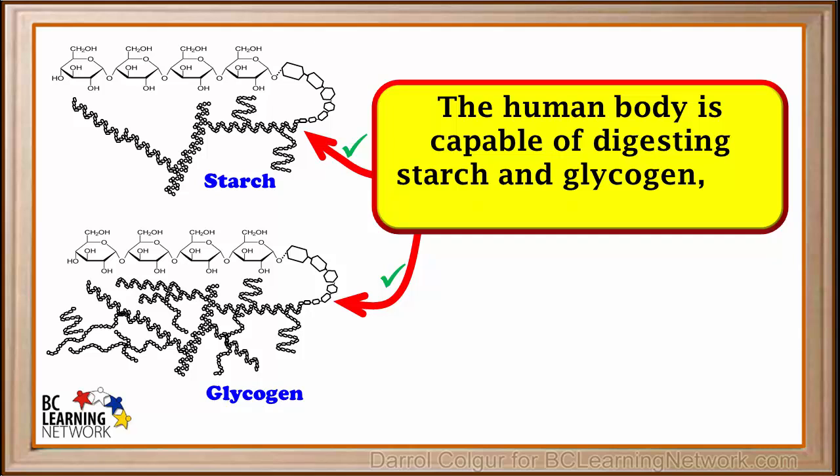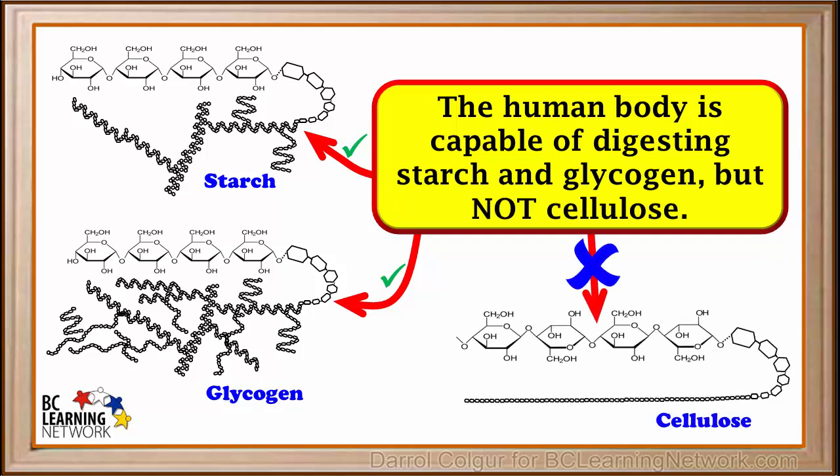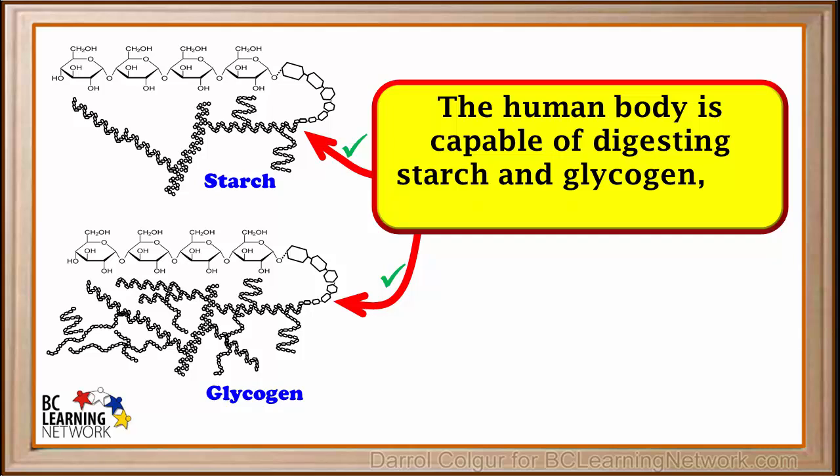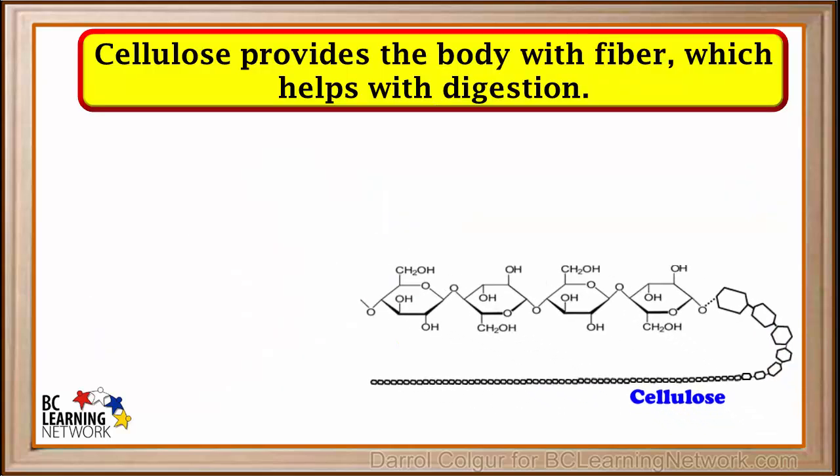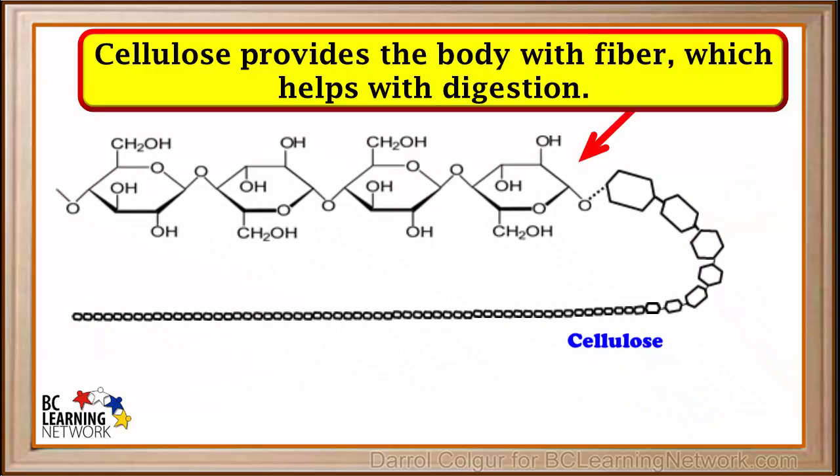It is important to note that the human body is capable of digesting starch and glycogen, but it is not capable of digesting cellulose. The body breaks down starches and glycogen in steps, eventually ending up with many single glucose molecules, which the body uses for energy. Even though the polysaccharide cellulose is not broken down by the body, it provides the body with fiber, which is believed to help with digestion in the large intestine.